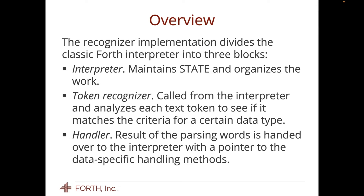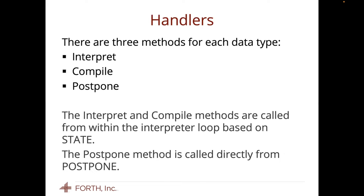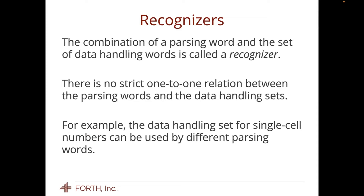What do I do with this depending upon the state that I'm in? There are three methods for each data type: interpret, compile, and postpone. Postpone is kind of a special case — there's always been a form inside — so it made sense to split it out as having its own handler. The interpret and compile methods are called from within the interpreter loop based on state. The postpone method is called directly from postpone. The culmination of a parsing word — the part that actually takes the token and says 'do I know what to do with this?' — and the set of data handling words that gets passed off to, all as a unit, is called a recognizer.